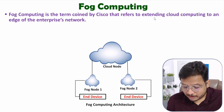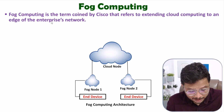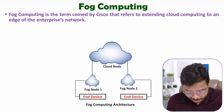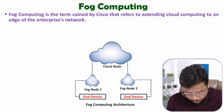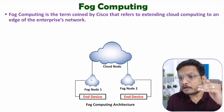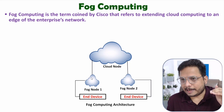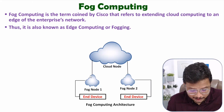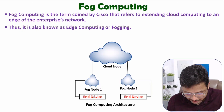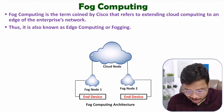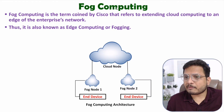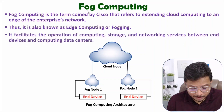Fog computing is a term coined by Cisco that refers to extending cloud computing to the edge of an enterprise network. N devices will be accessing the cloud through the fog node, and with this fog node there will be frequently accessed data. It is also referred to as fogging and as edge computing, because all N devices have an edge before accessing the data — latency is very less. For real-time applications, fog computing is preferred.